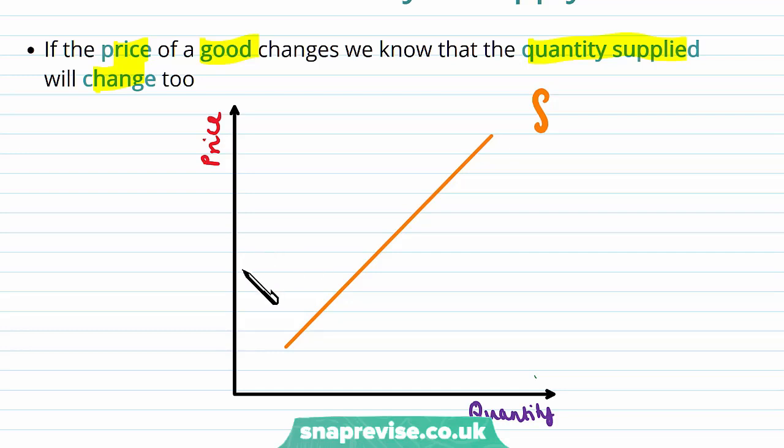So if the price increased from this point P up to here P1, then we know that the quantity supplied is changing too. So it goes from Q to Q1. And one thing to note is that they are both moving in the same direction.